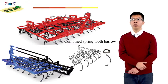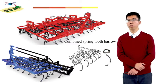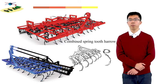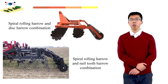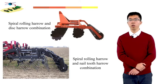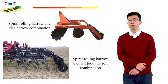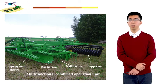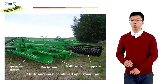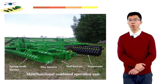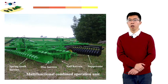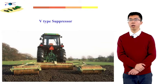This picture shows a combined spring-tooth harrow. These two pictures show a spiral rolling harrow and disc harrow combination. The bottom shows a spiral rolling harrow and nail-tooth harrow combination. This picture shows a multifunctional combined operation unit, which can be used for many functions — it contains the spring-tooth harrow, disc harrow, nail harrow, and suppressor. The last picture shows the V-type suppressor.